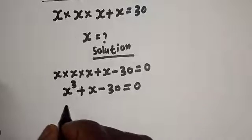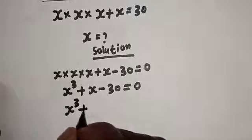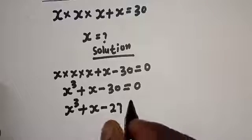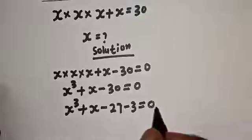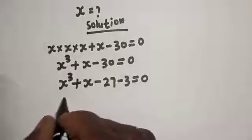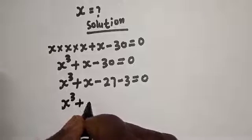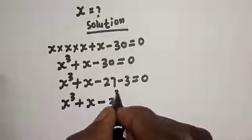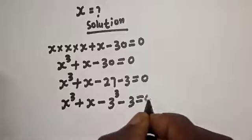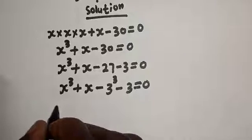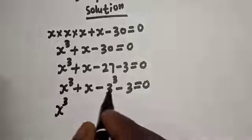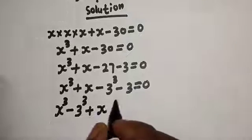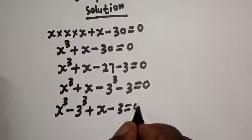This is s raised to power 3 plus s minus 30 equals 0. Now, 30 can be written as 27 plus 3, so s raised to power 3 plus s minus 27 minus 3 equals 0, where 27 is 3 raised to power 3.